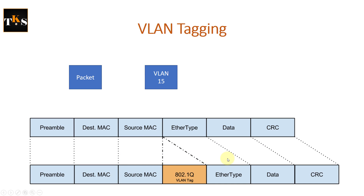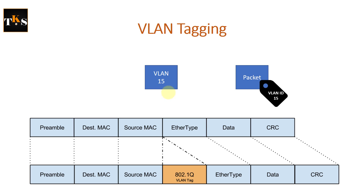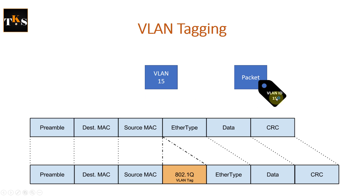So VLAN tagging. This is one of the terms you may have heard of. Typically, what it is: when a packet goes through the network, a particular tag is attached to that packet to tell it which VLAN that packet is in. In this animation, you see where the packet goes through a VLAN, and when that packet comes out, there is a tag of the VLAN ID attached to it. So a packet traversing the network goes through the VLAN and then comes out with the VLAN tag based on the VLAN it has passed through.